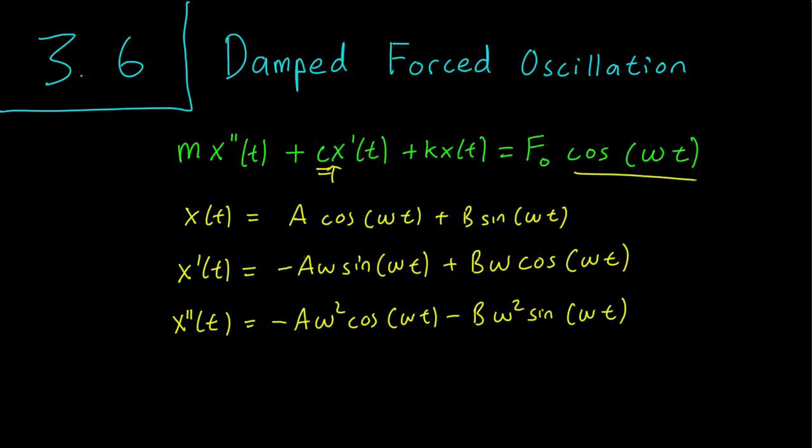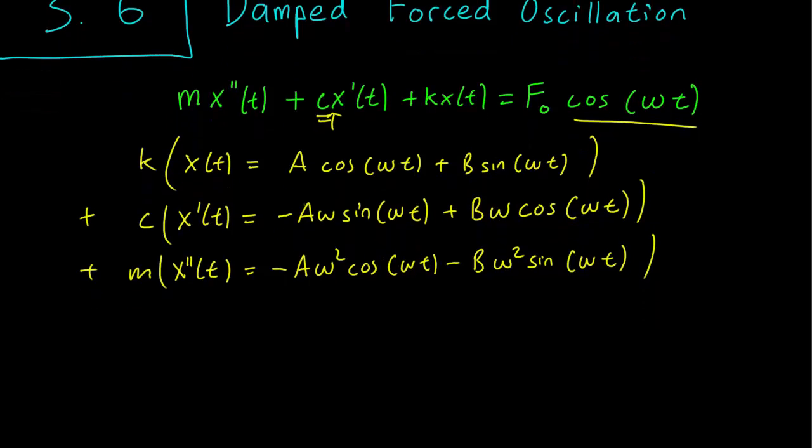So writing down the left hand side, which consists of k times x t plus c times x prime t plus m times x double prime t, we know that this left hand side is all going to be equal to f naught cosine omega t.